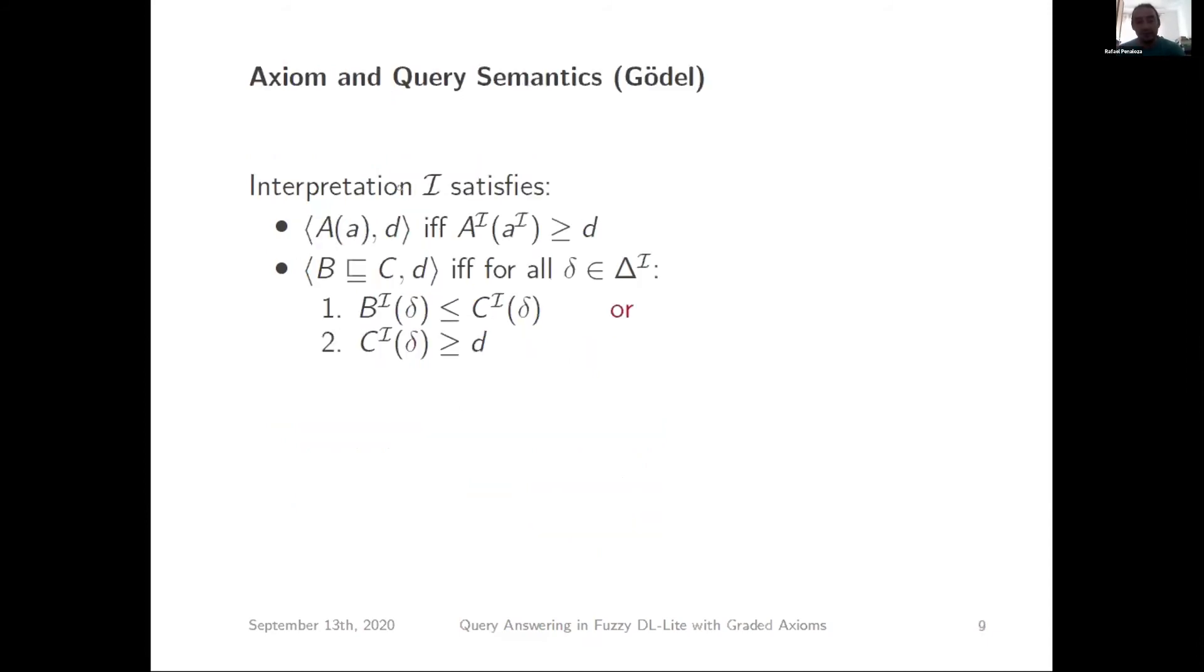Now we just say the interpretation satisfies our assertion if the mapping of the individual belongs to that concept to the degree at least d. The subsumption is essentially an implication, a fuzzy implication. We have to have that either the degree to which it belongs to B is smaller than the degree of d, so it's more true in C than in B, or the degree in C is already greater than d. This is a generalization from the classical case. We answer the query if all the conjuncts in our conjunctive query hold to degree at least d. So we just check every conjunct separately. And of course, as usual, we have an answer if it's a certain answer, so it has to hold in all models.